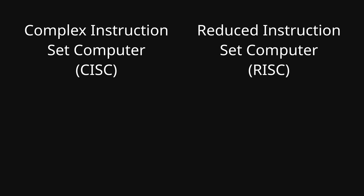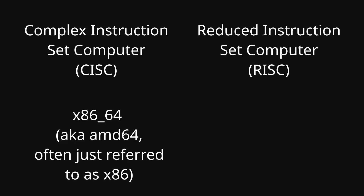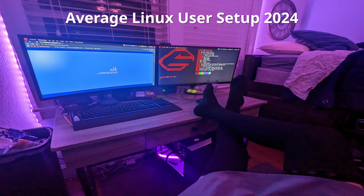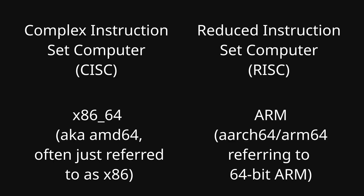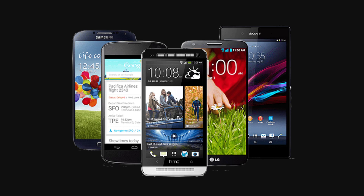An example of a CISC instruction set would be the x86-64 processors made by Intel and AMD. If you're watching this video on a laptop or desktop, the chances are it has an x86 processor. An example of a RISC instruction set would be ARM. Historically, this has been the standard for smartphones, tablets, routers and most single board computers such as the Raspberry Pi.